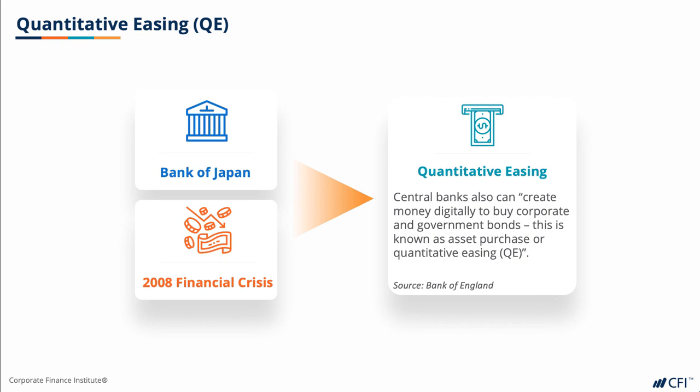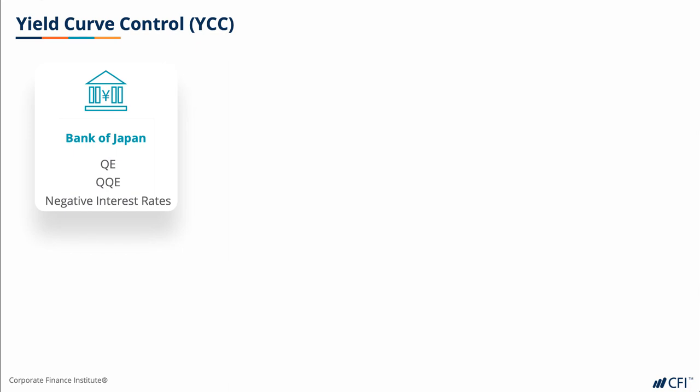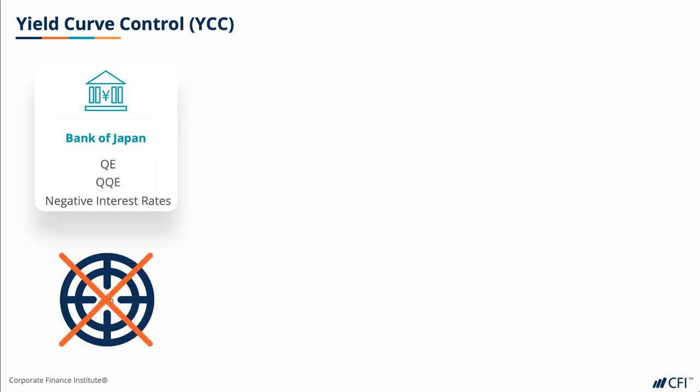The latest iteration of the Bank of Japan's innovative monetary policies was Yield Curve Control, or YCC. It was introduced in 2016 after the Bank of Japan felt that QE, QQE, and negative interest rates did not get inflation to the targeted 2%. Formerly called QQE with Yield Curve Control, the Bank of Japan felt that adjustments to the front end of the curve and outright purchases of assets weren't having enough of the intended effect.